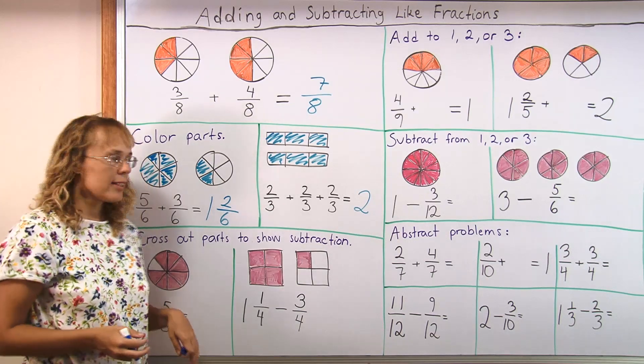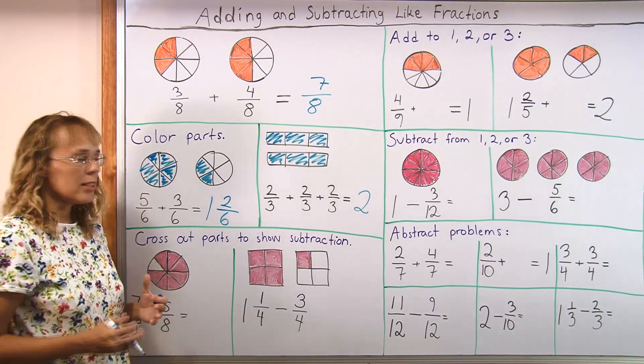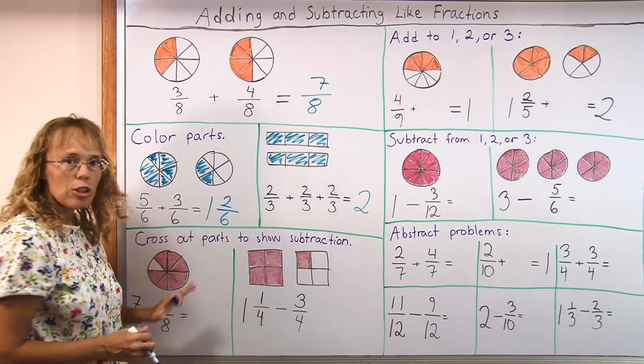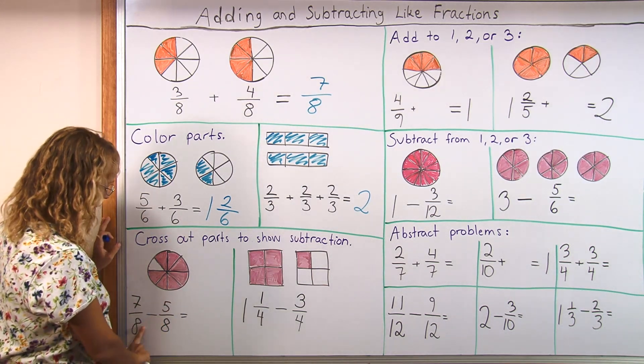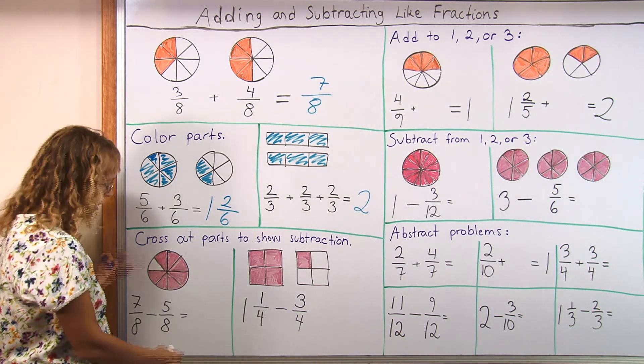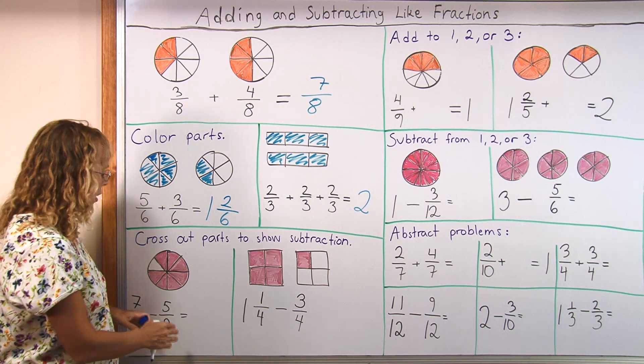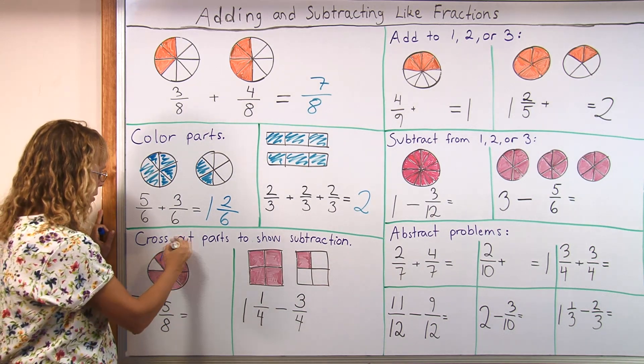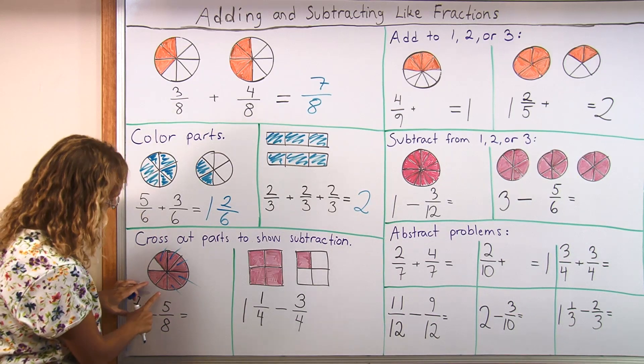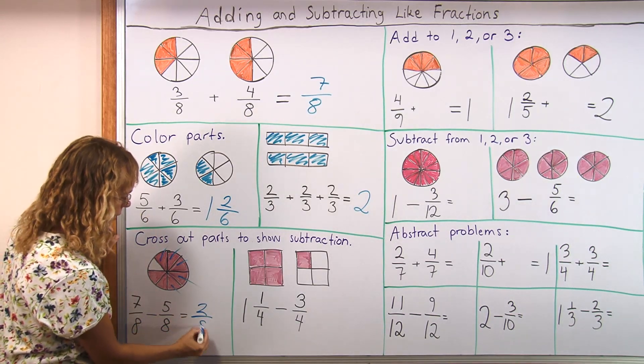Let's look at subtraction next. It is similar, easy. And we can solve it visually this way. 7 eighths minus 5 eighths. And the picture shows the starting point 7 eighths. And then you take away 5 eighths. The child can cross out parts. Maybe like this. Those are taken away. And then what is left is 2 slices and they are eighths.